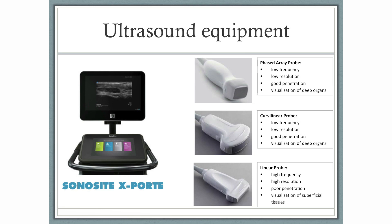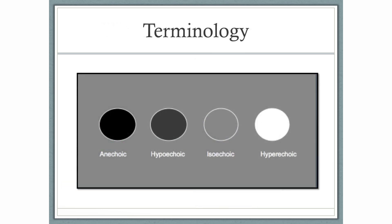The curvilinear probe can also be used for this exam, though the footprint is larger. Additionally, the linear probe can be useful specifically for lung ultrasound. Throughout the video today, you may hear us refer to several basic ultrasound terms with respect to echogenicity of different tissues. These include anechoic, hypoechoic, isoechoic, and hyperechoic, as depicted here.